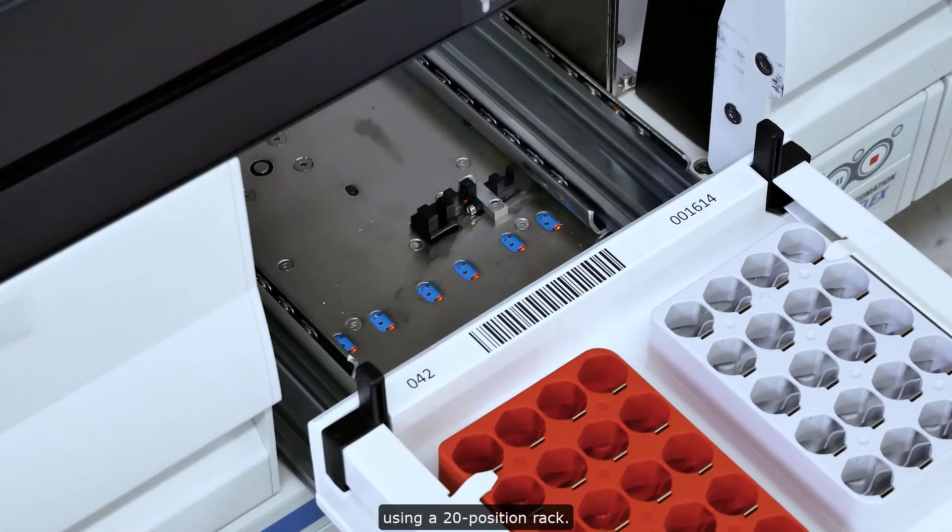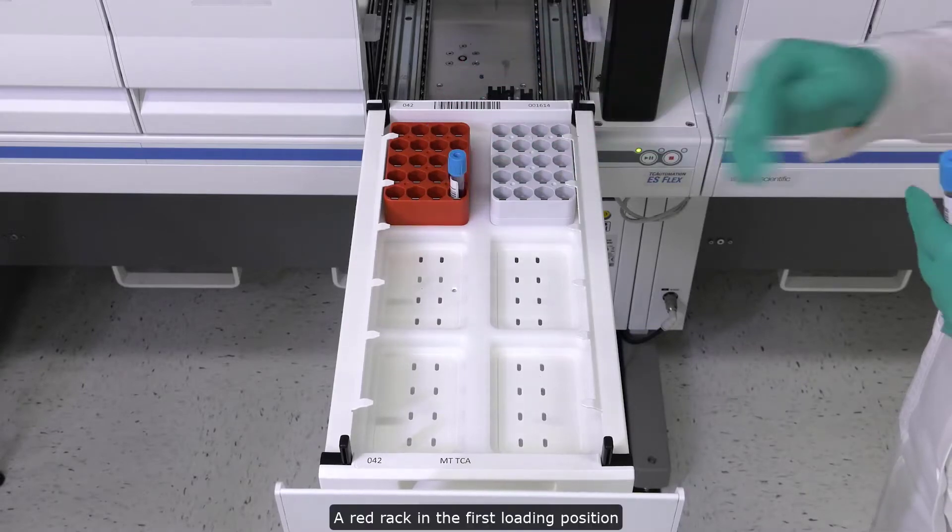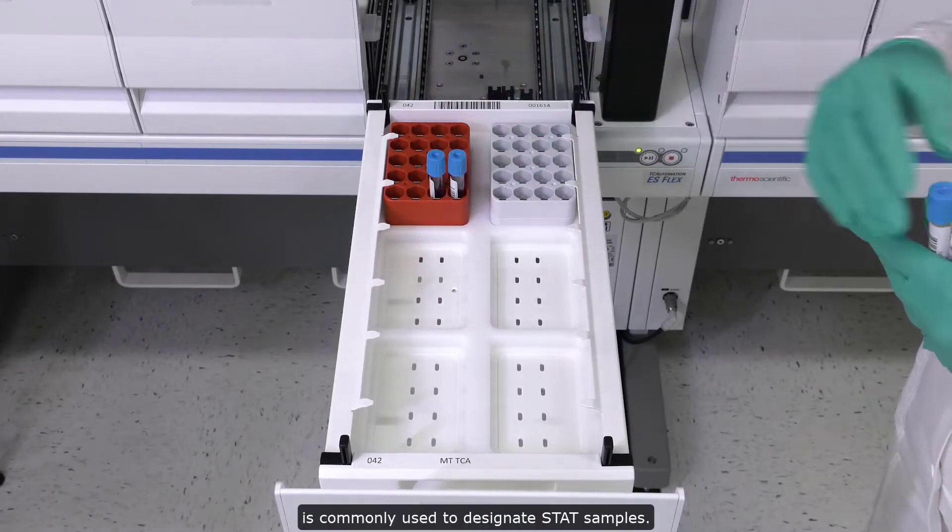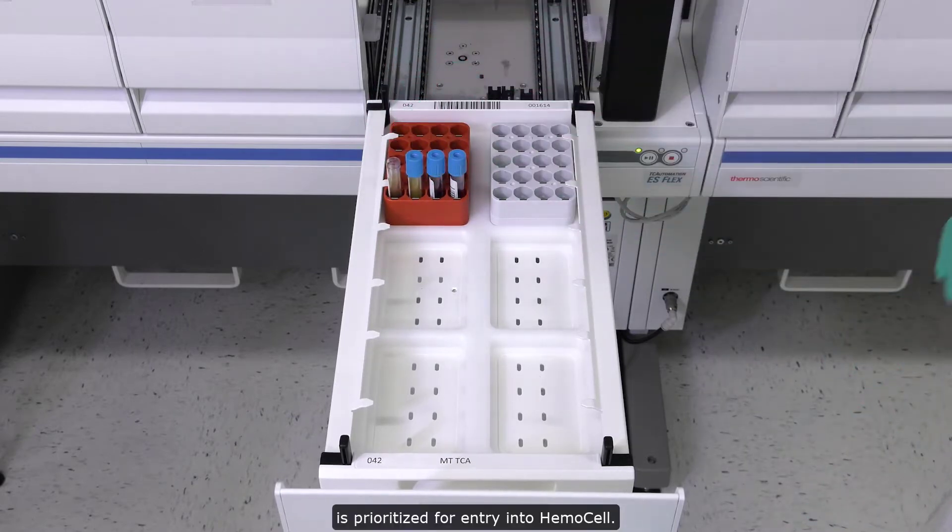Samples are placed on board using a 20 position rack. A red rack in the first loading position is commonly used to designate stat samples. This loading area is prioritized for entry into HemoCell.